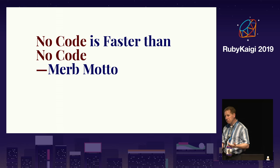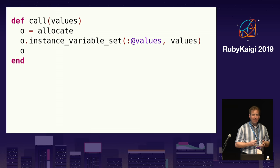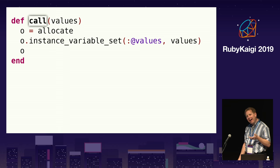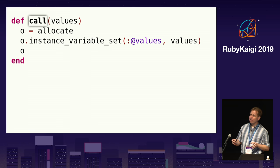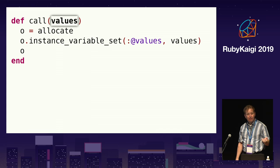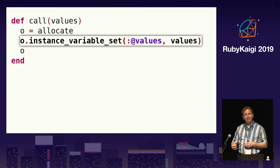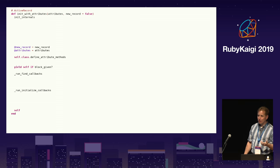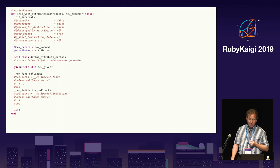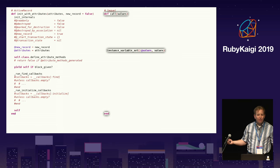Here's the class method that Sequel uses to create new model objects. The method name uses 'call', which is an odd choice for a method that creates objects — I'll discuss why later as it relates to a different optimization. Notice how this method does very little: it takes the values hash retrieved from the database, allocates a new model instance, sets the values hash to an instance variable, and returns the instance. Here is a comparison with the similar instance method that ActiveRecord uses to create instances, and it should not be a surprise that Sequel is faster — it just does much less in this performance sensitive code path.